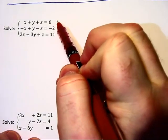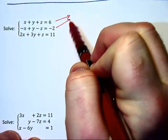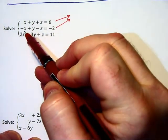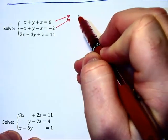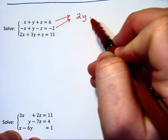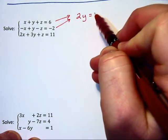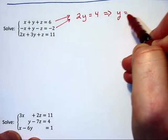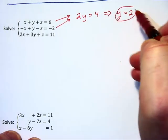In this next problem, when we go to combine these first and second equations together, we notice that the x's and z's cancel each other out and we get 2y is equal to 4. Therefore, we can find out that y is equal to 2 very easily.